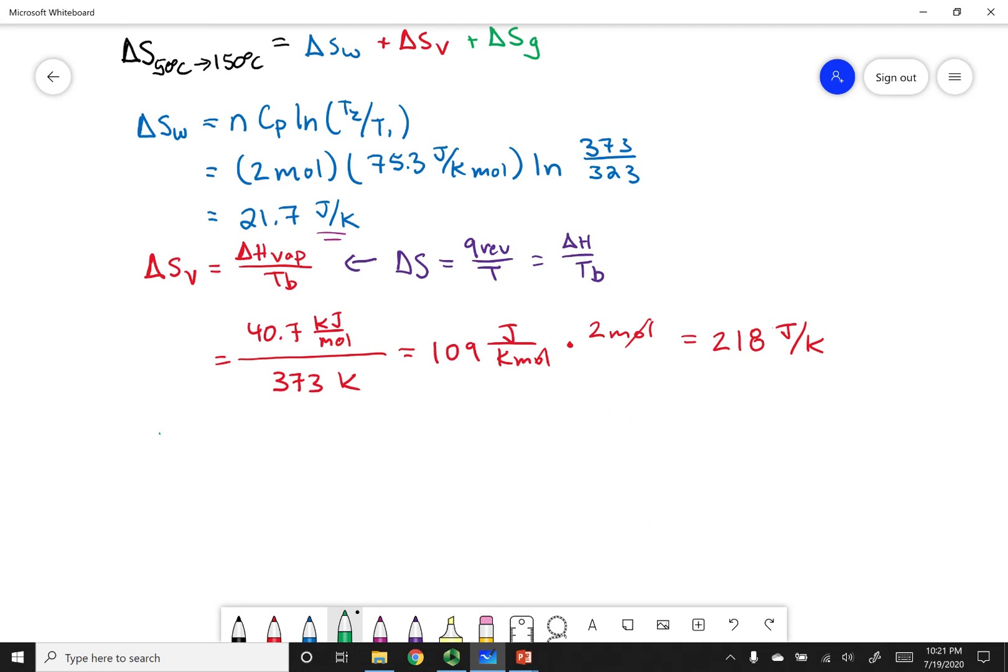All right, let's do the last entropy calculation, which was me heating up gas. And again, it's going to use that same formula we used above. n C_P ln of T_2 over T_1. So again, we have two moles. Be careful because the C_P is going to change depending on the state of matter that you have. So if I look at the molar heat capacity for gas, it's 36.4 joules per Kelvin per mole.